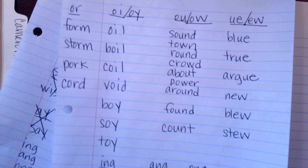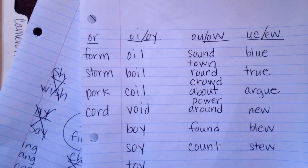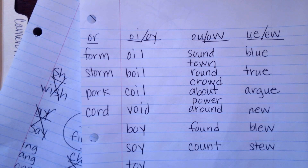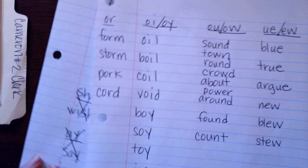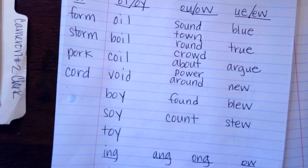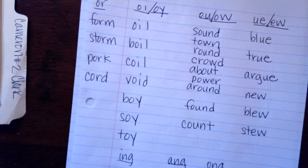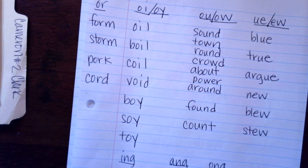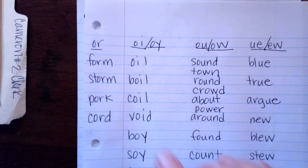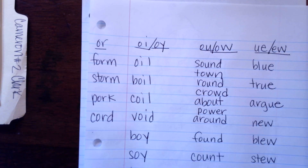So here is your homework. We're going to go over OR makes OR. So you're going to pause the video, or mom's going to pause the video, and you're going to read these words right here. OR makes OR.